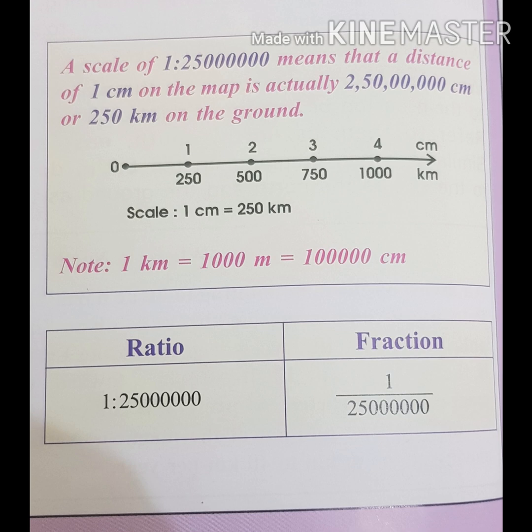Next is scale. A scale is a measuring line that shows the relation of the distance between two places on a map to the actual distance on land. The definition of scale: it is a ratio between a distance measured on the map and the corresponding distance on land, connecting the two points, represented by the same unit.